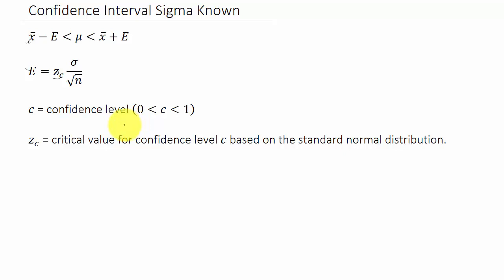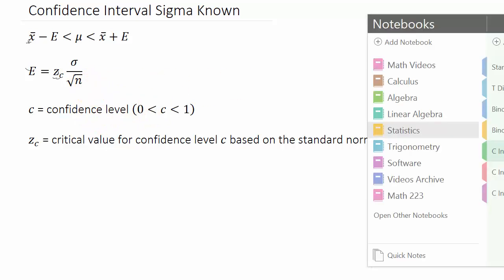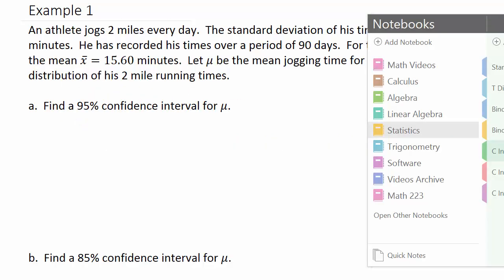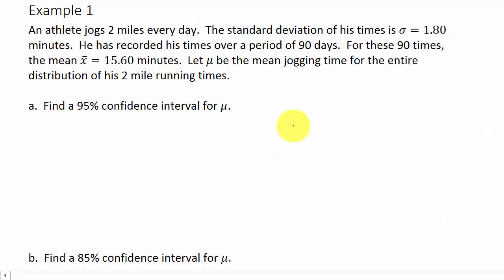C is between zero and one. So if it's a 95% confidence interval, then C would be 0.95. Let's go ahead and take a look at an example.